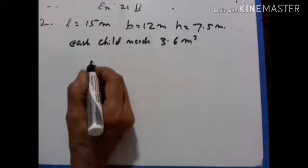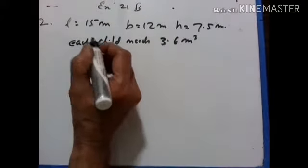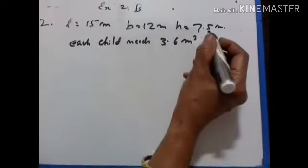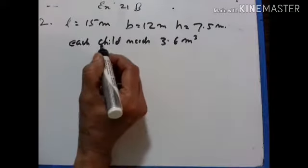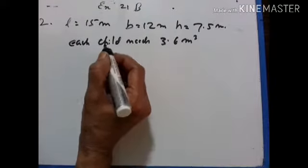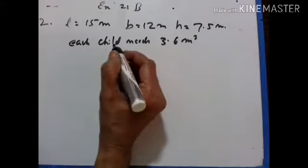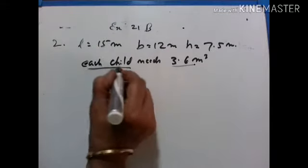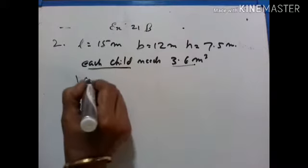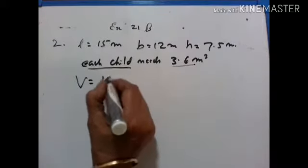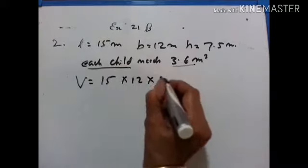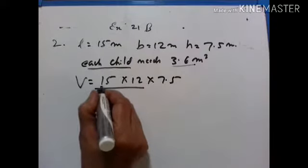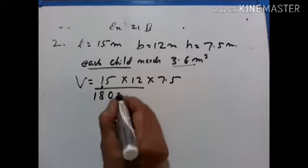Second problem: the dimensions of a classroom are length 15 meter, breadth 12 meter, and height 7.5 meter. Find how many children can be accommodated in this classroom, assuming 3.6 meter cube of air is needed for each child. Let us find the volume of this room first: 15 into 12 into 7.5.